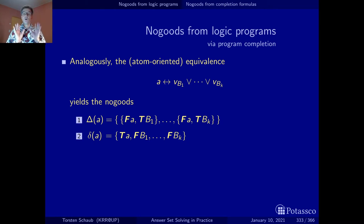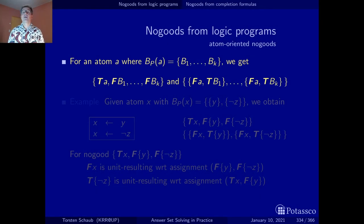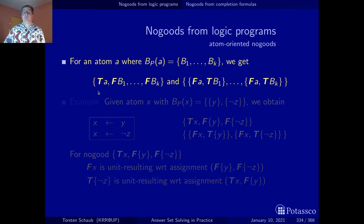Now that you have seen which no-goods are obtained from the completion formula, let's see them in action and look at some examples. Let's start with the atom-oriented no-goods. Whenever we have an atom a that appears as the head of k rules whose bodies are B1 to Bk, we get k+1 no-goods. The first one says it cannot be the case that the atom is true but all rules having this atom in the head are inapplicable because the respective bodies are all false.